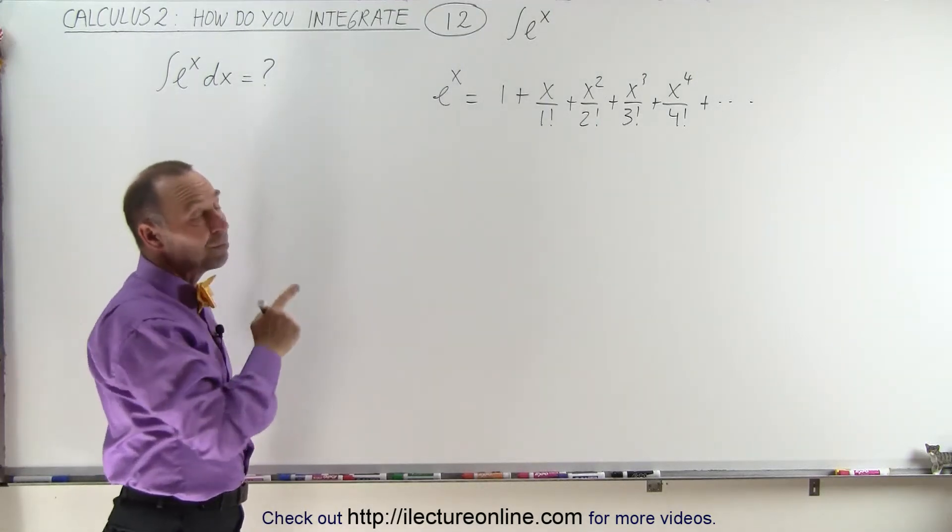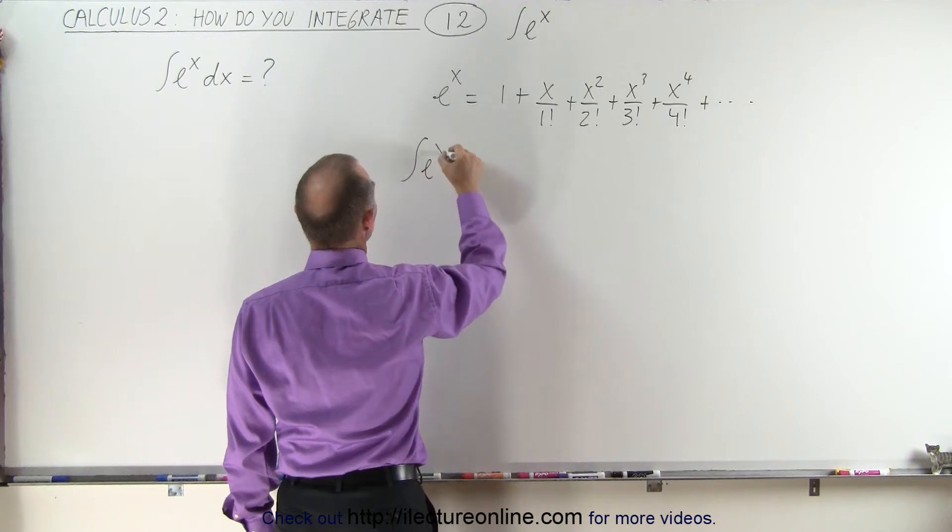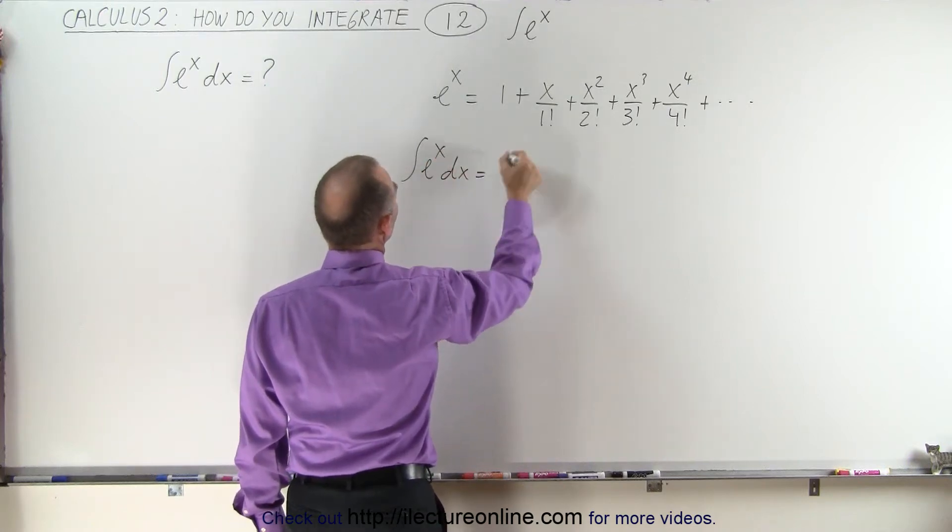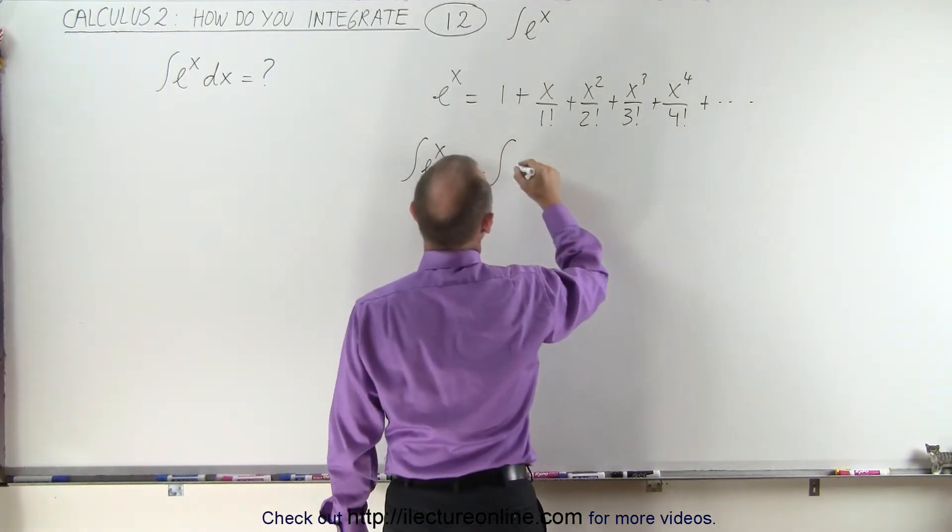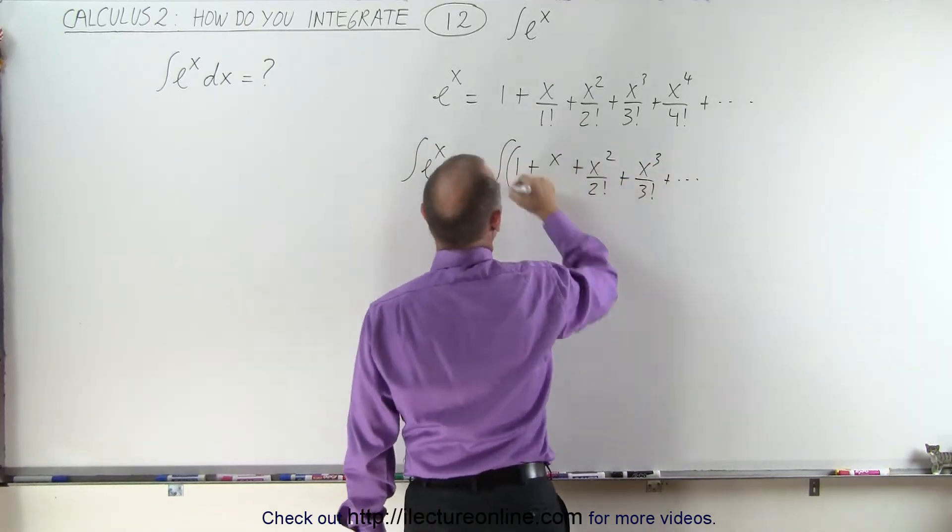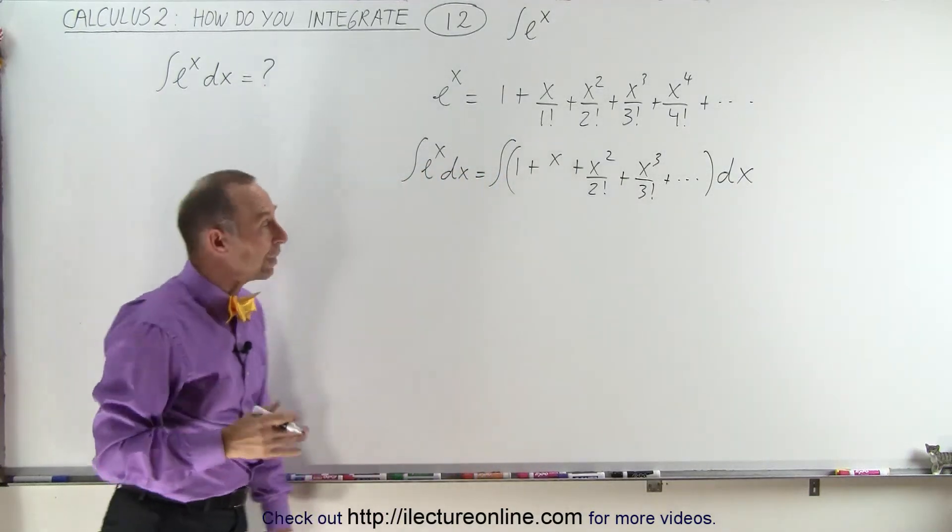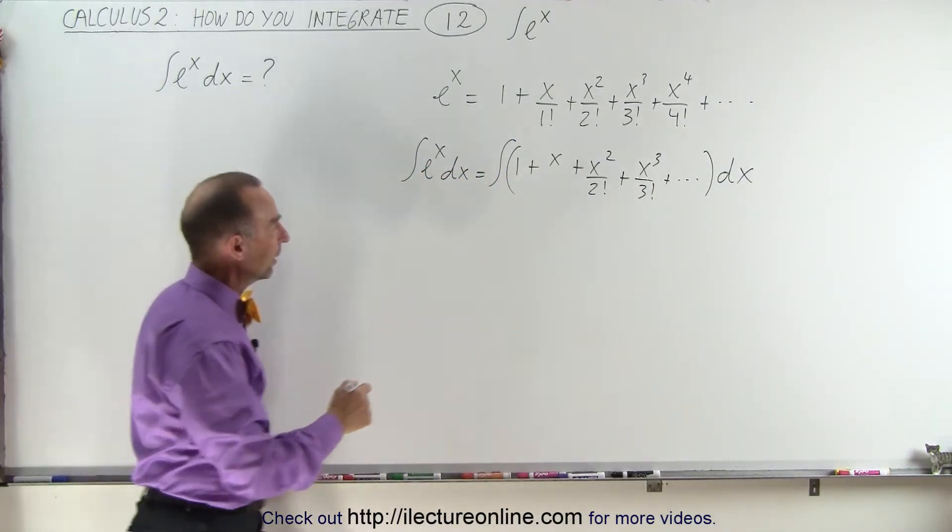Which means we can integrate that. Therefore, the integral of e to the x dx must be equal to the integral of that entire sum. If we integrate the right side, we get the integral of the left side. Let's do that and see what we get.